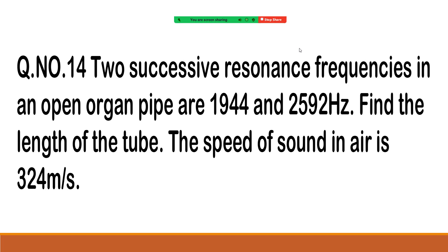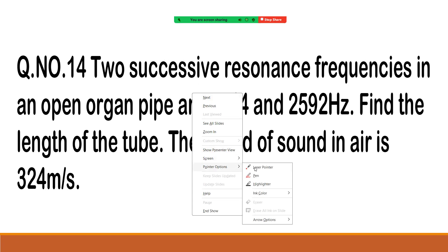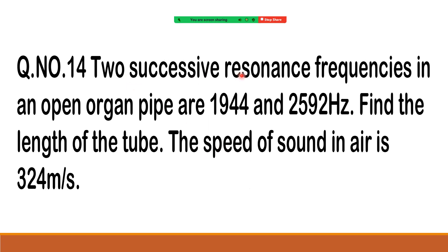Hi students. In this lecture, we are going to solve problems based on organ pipes. See the problem. It is given that two successive resonant frequencies in an open organ pipe are 1944 Hz and 2592 Hz. Find the length of that tube. Speed of sound in air is 324 meter per second.